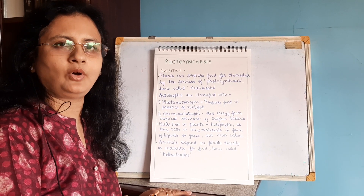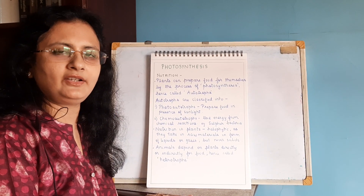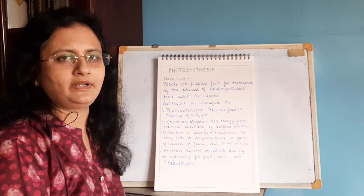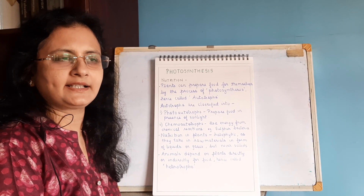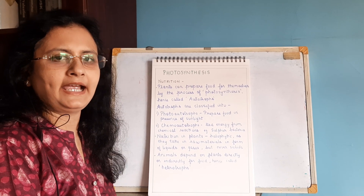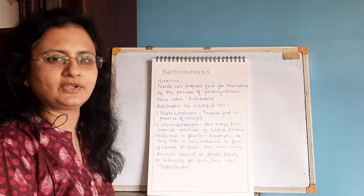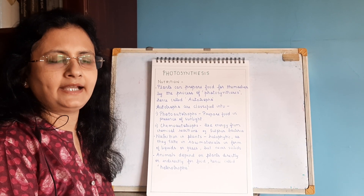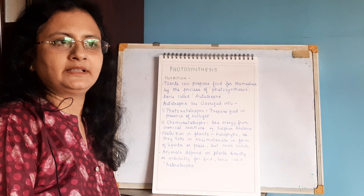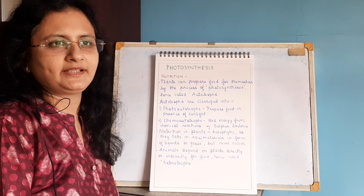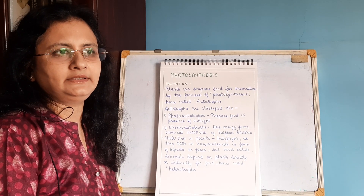So plants are called as autotrophs. Animals depend upon plants directly or indirectly for their food, so they are called as heterotrophs. Autotrophs are further classified into photoautotrophs and chemoautotrophs. Photoautotrophs make use of light energy, and chemoautotrophs make use of chemical reactions taking place in the body, like sulphur bacteria.